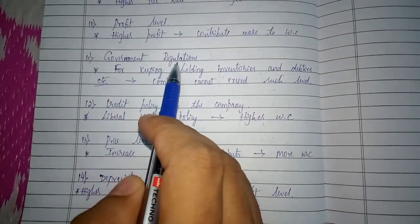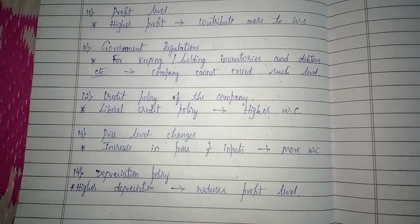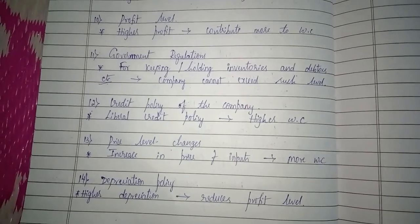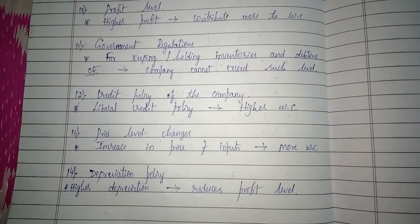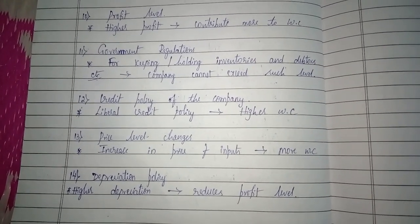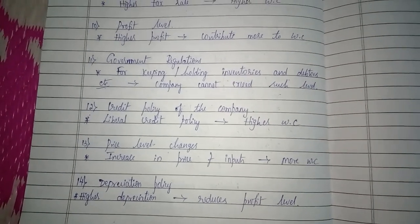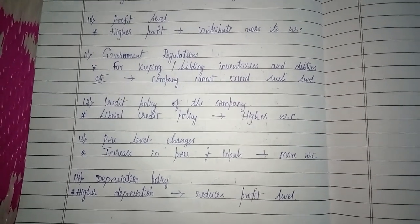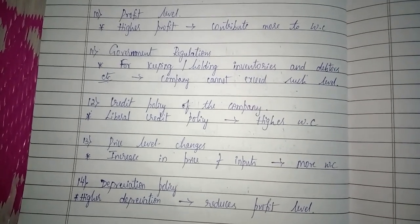The eleventh factor is government regulations. The central or state government may frame rules relating to working capital activities. For example, the government may fix a maximum level for holding inventory and debtors in the company. The company cannot exceed that level. Since inventory and debtors are current assets, such restrictions directly affect the working capital of the company.